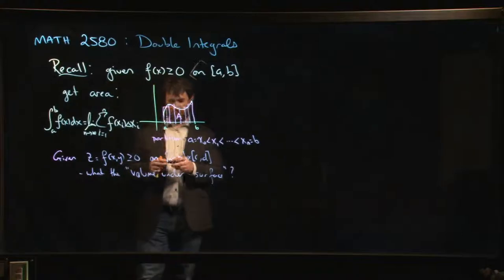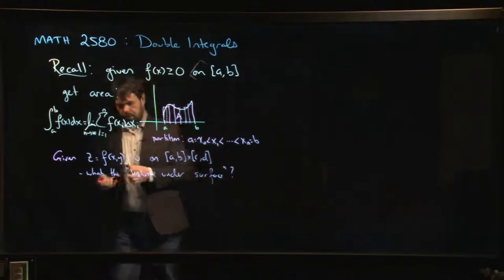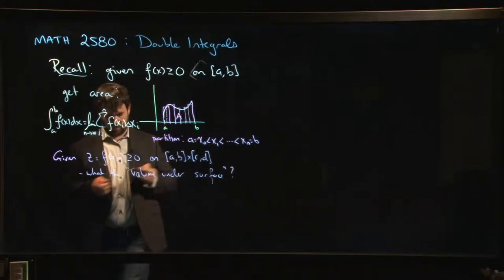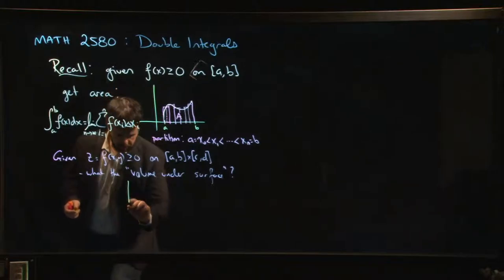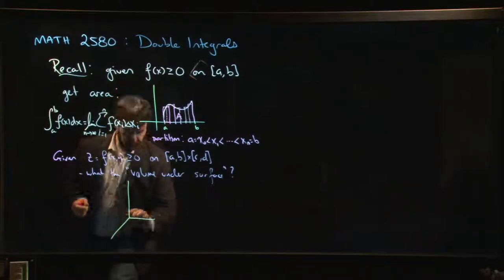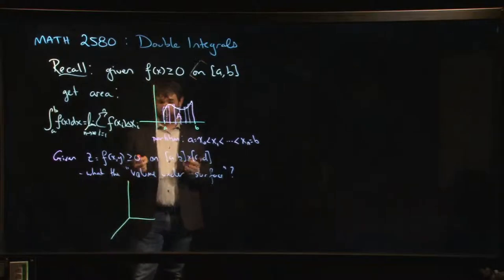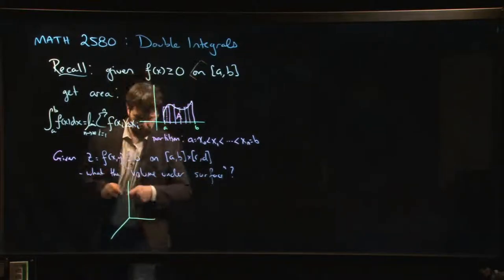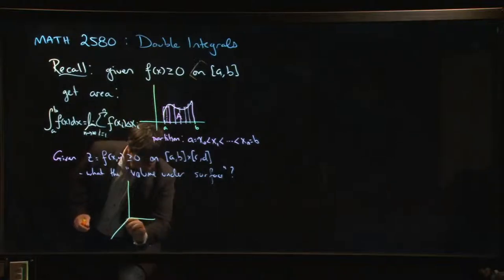All right, so this is the same idea. And we can draw it out as well, and we can try to make sense of this. So what does the picture look like now? Well, now we're in three dimensions, so we'll draw our three-dimensional coordinate system. We've got maybe a is here, b is here, c, d.